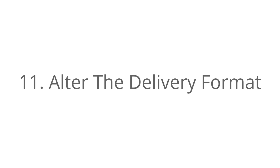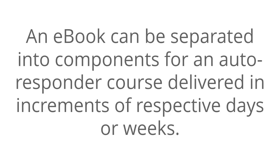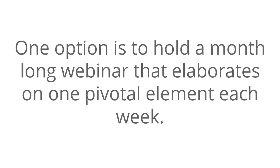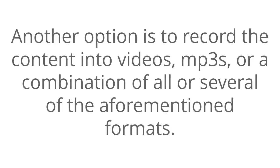Number eleven: alter the delivery format. An e-book can be separated into components for an autoresponder course delivered in increments of respective days or weeks. One option is to hold a month-long webinar that elaborates on one pivotal element each week. Another option is to record the content into videos, MP3s, or a combination of several of the aforementioned formats.